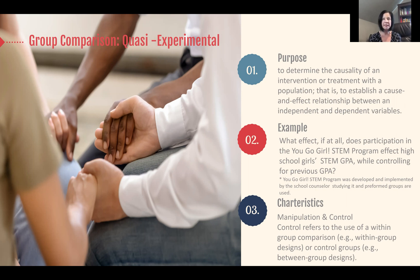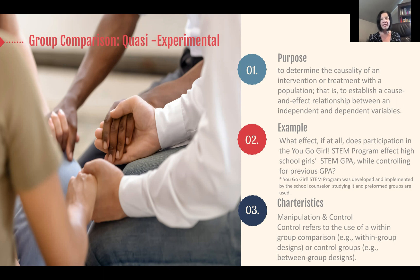Let's use an example with a between-group design. Something important to note with a quasi-experimental design is the control is always a previously formed group, because random assignment can't happen. In this case, a school counselor wants to implement and understand the effect of the You Go Girl STEM program. She has two counseling groups with girls — one at one o'clock and one at two o'clock. At one o'clock, she implements the You Go Girl STEM program, and at two o'clock she does the traditional group counseling program.